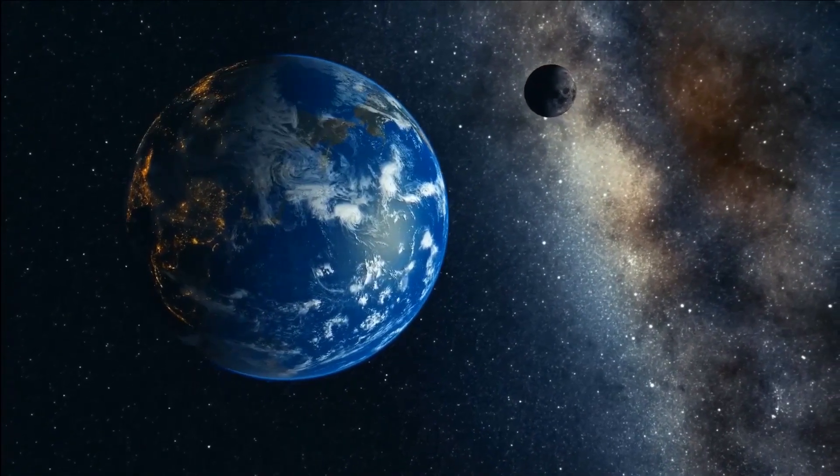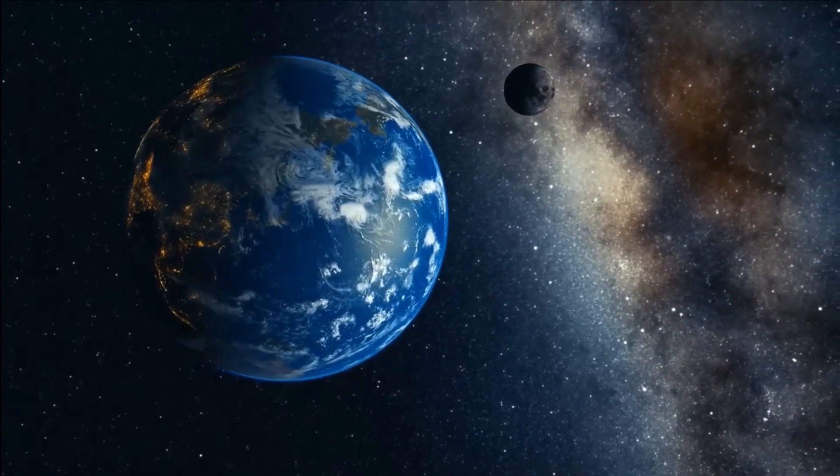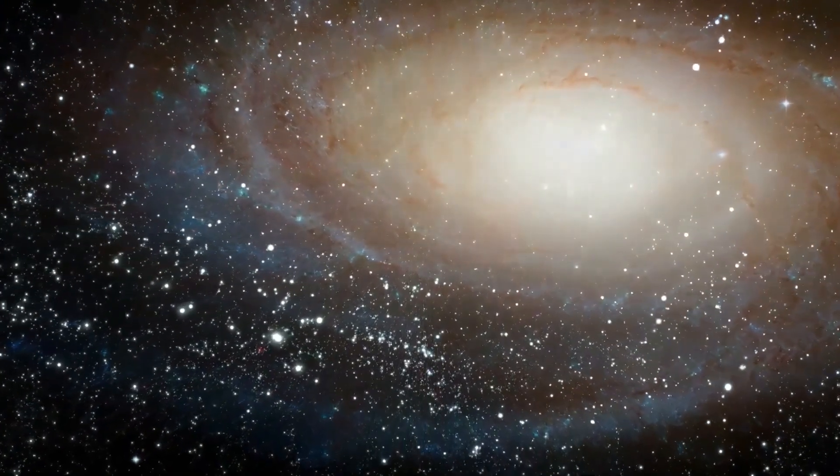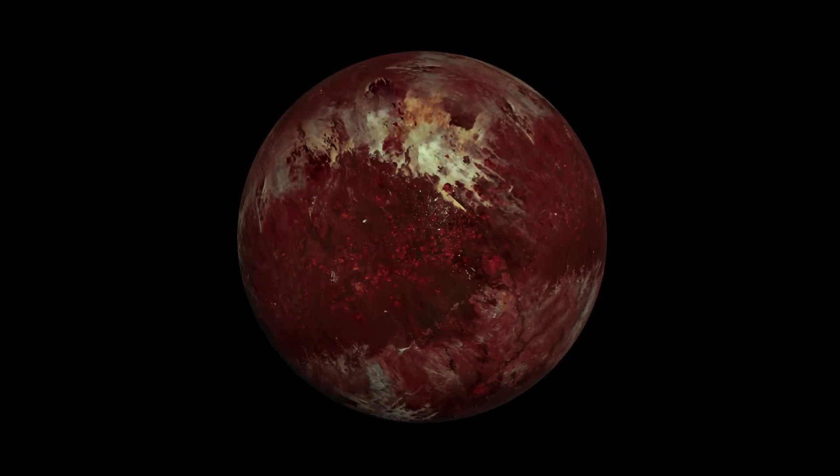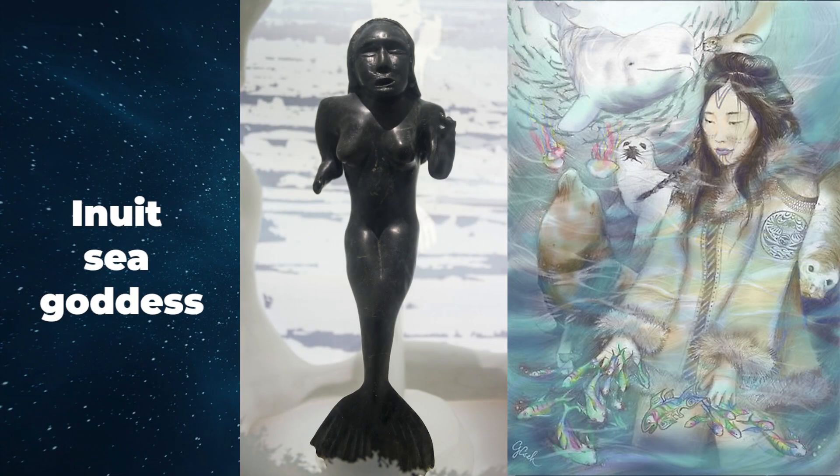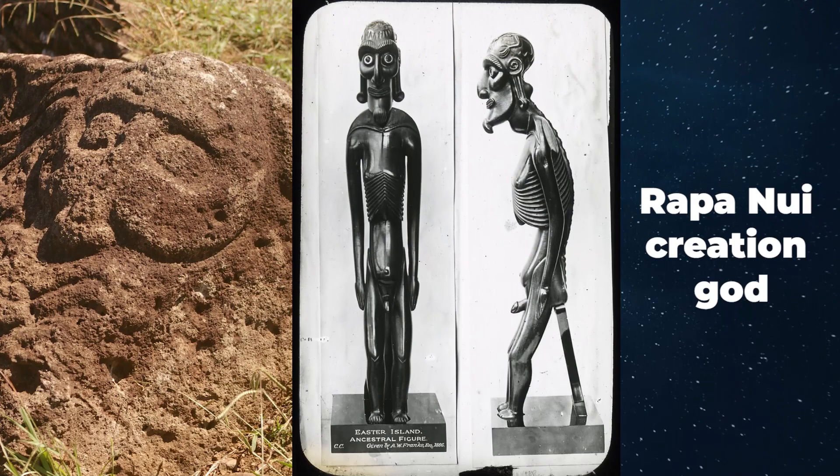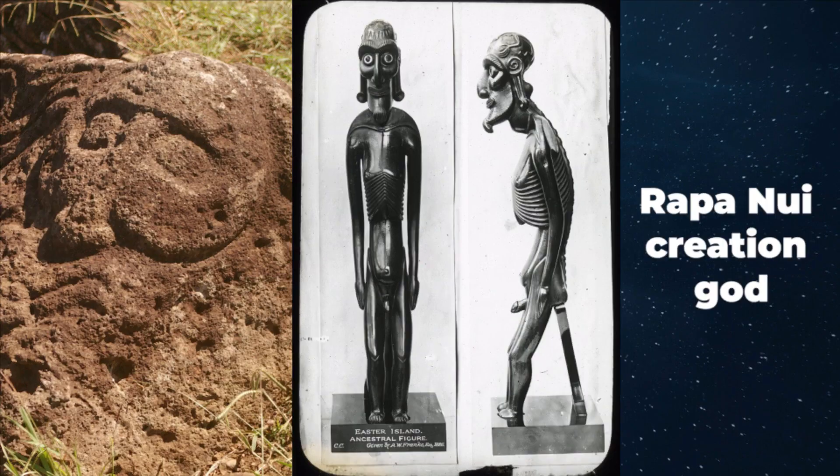But in recent years, astronomers have begun giving the Kuiper Belt's objects names in honor of indigenous deities from all over the planet. For instance, Sedna is named after an Inuit sea goddess, and Makemake is named after a Rapa Nui creation god.